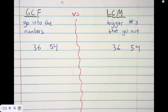Who can predict what our GCF is going to be? Not the actual number but how big it's going to be. It's going to have to be a number that is at the very most 36.